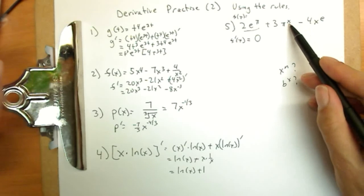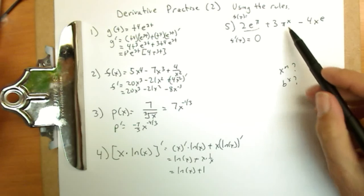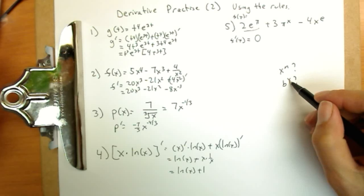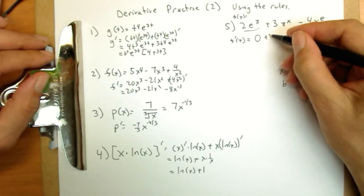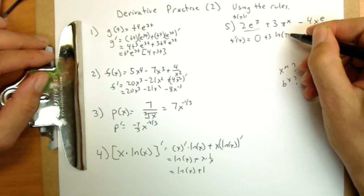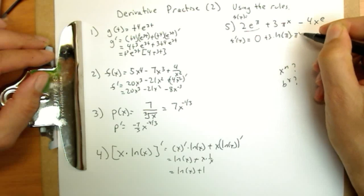3 pi to the x. The x is what tells me which of the rules I've got. If x is in the power, I have b to the x. So this is going to be plus 3 times the natural log of pi times pi to the x.